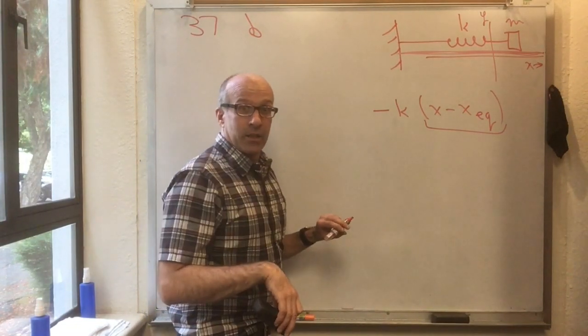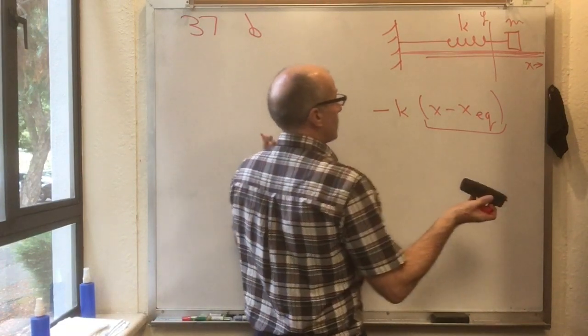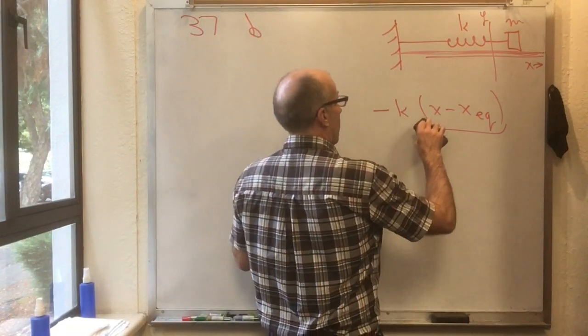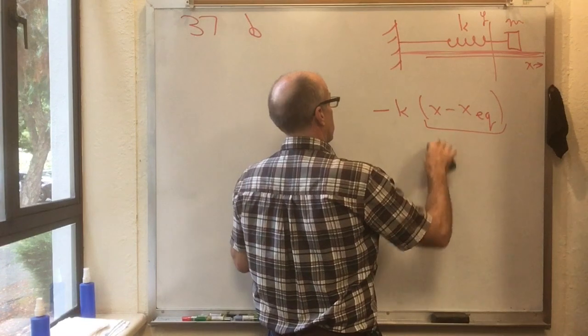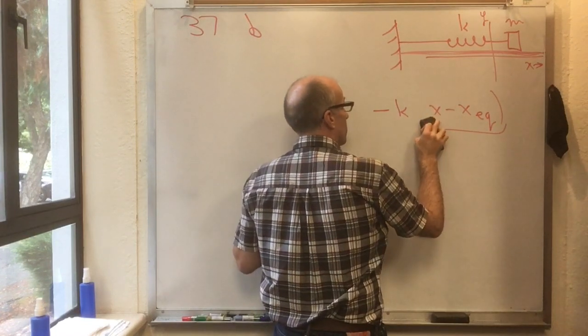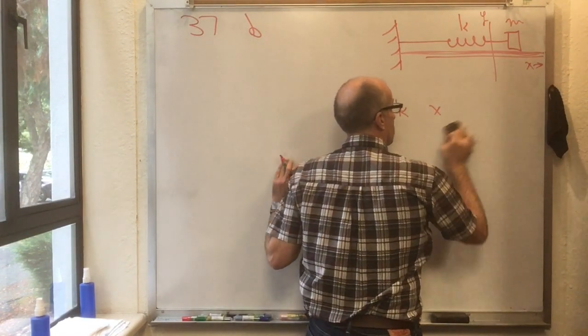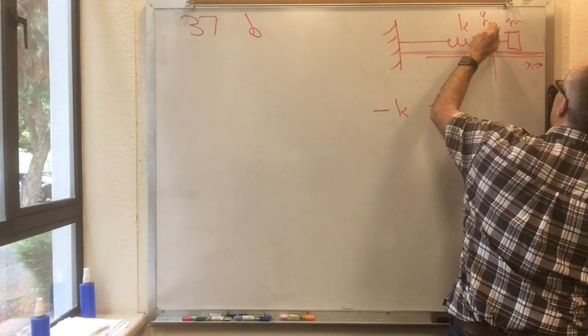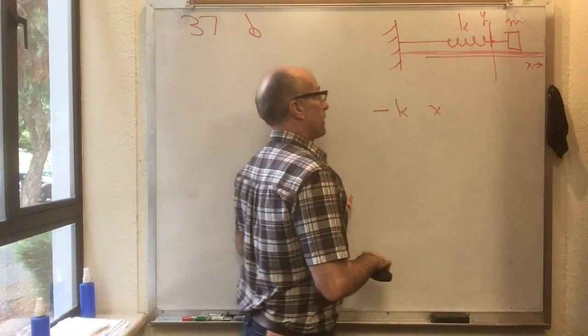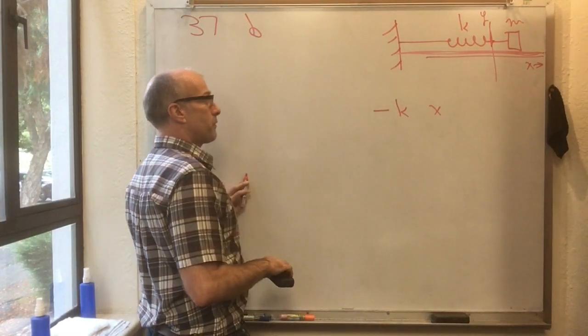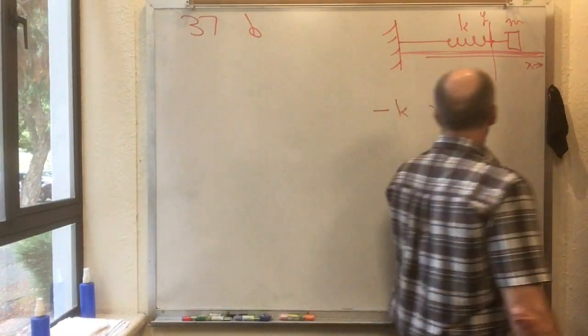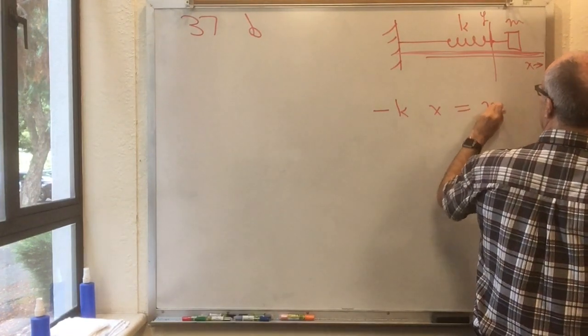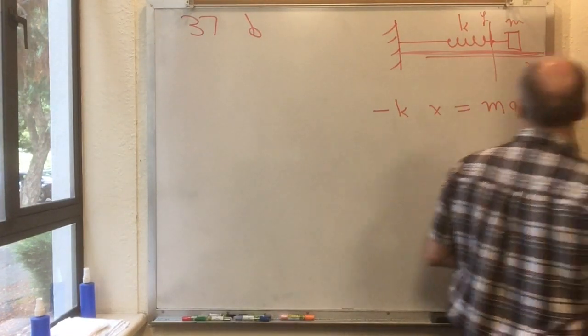Now we can make our lives even easier by choosing our coordinate system so that x equilibrium is zero. So we're going to make the origin of our coordinates be where the spring would like to sit, right there at the x equals zero line. So there's the force on the mass and the right-hand side of Newton's equation says that's equal to m ax.